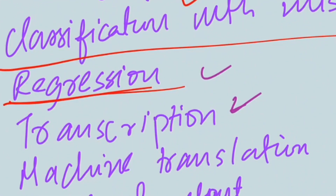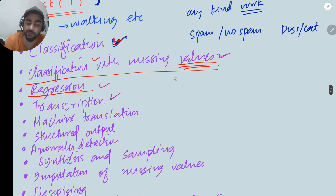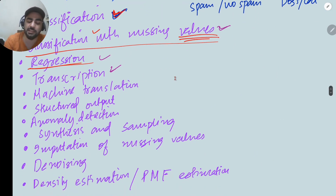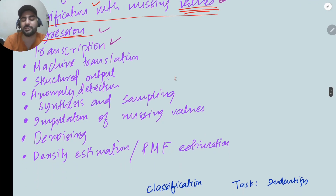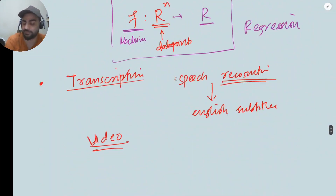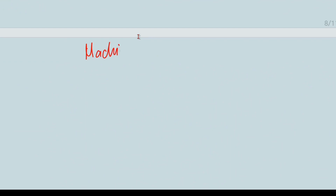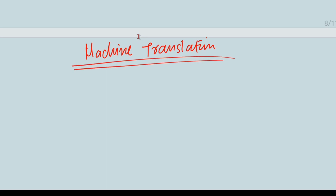Just to give you the big picture, we are defining what a task is. We saw the task definition, then what kinds of tasks exist in machine learning: first was classification, then classification with missing inputs or missing values, then regression tasks, then transcription, and then machine translation.